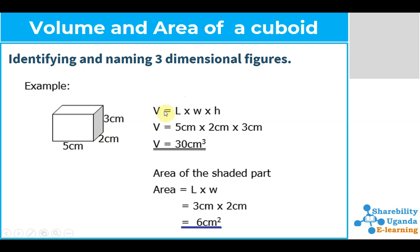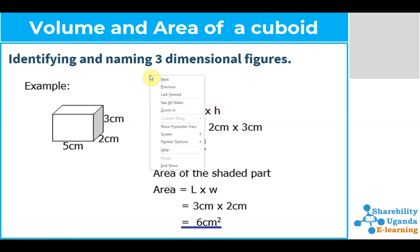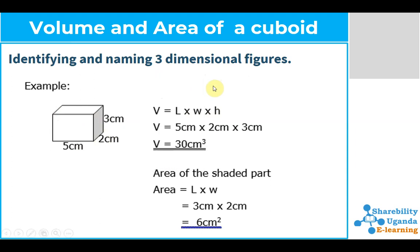We've been given our formula: V equals L times W times H. In simple terms, V is the volume, L is the length, W is the width, and H is the height.